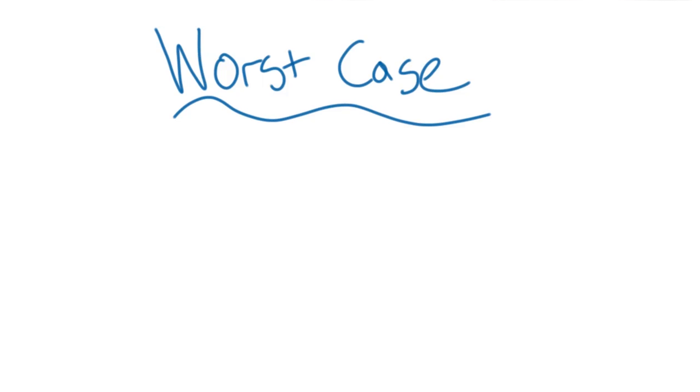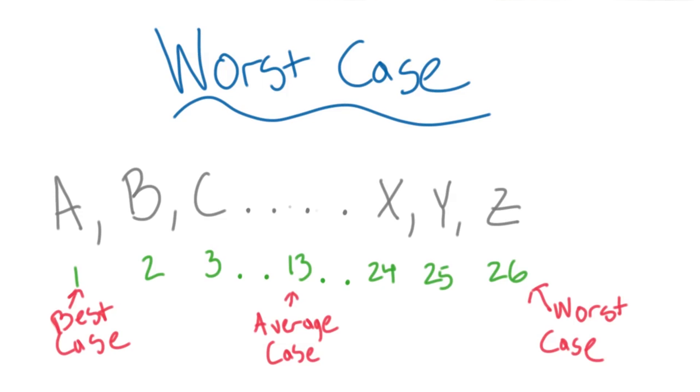We focus on worst case because it puts an upper bound on the amount of time our code is going to take. You could also talk about efficiency in terms of the average case or even best case. So if we're talking about letters in the alphabet, the worst case means we would have to go through all 26 letters.